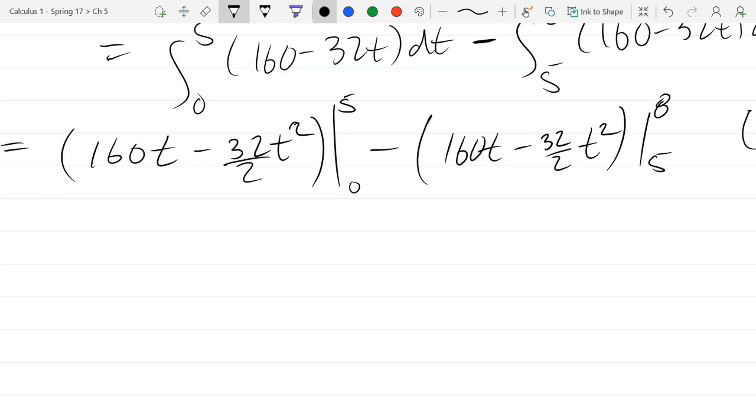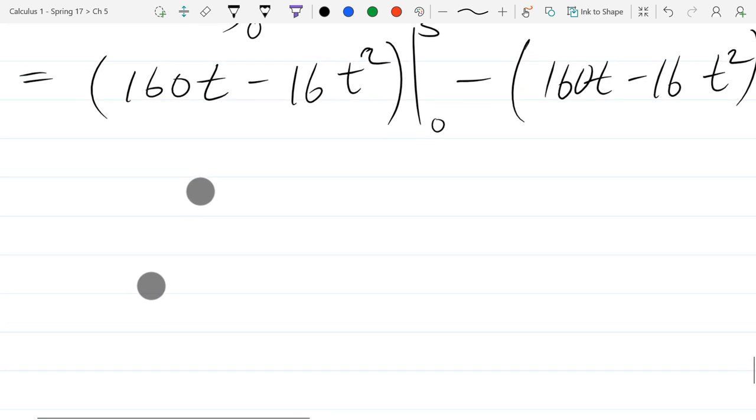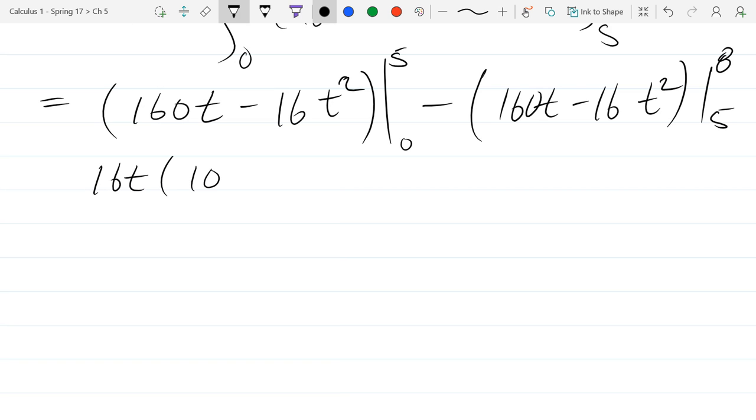So I'm plugging in 5 first. And actually, let's make these numbers less ugly. I'm going to put the 16. So what algebra can I do before I plug in values? Factor. So let's go ahead and do that. I can factor out not just t, but 16t. So let's go ahead and factor out 16t. And we're left with 10 minus t. That looks a lot nicer. Minus 16t, we're left with 10 minus t again.